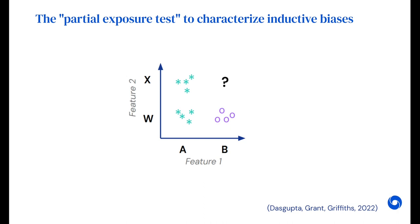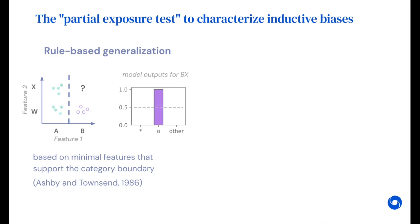In this test, the data consists of two features and one quadrant is held out. How would you label the held-out quadrant Bx? As stars or circles?